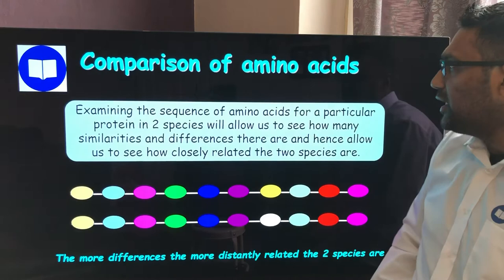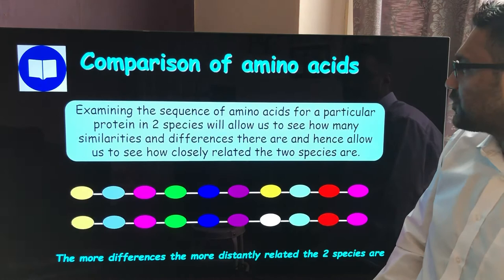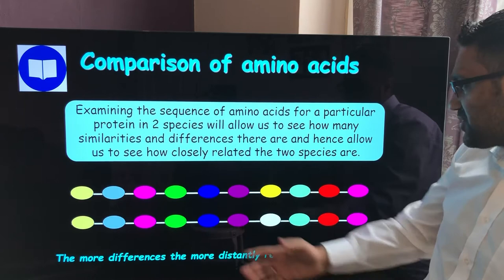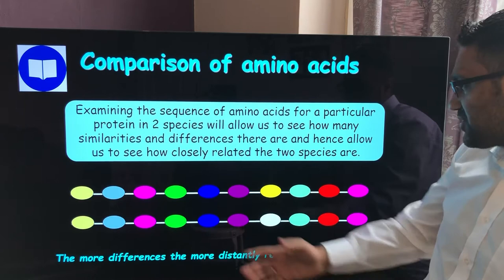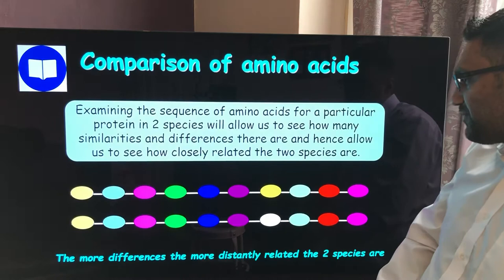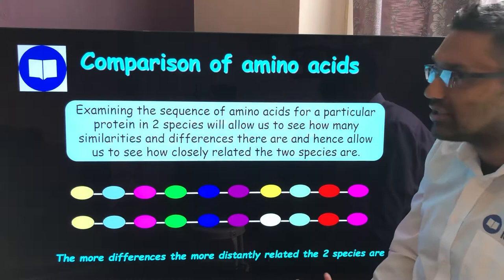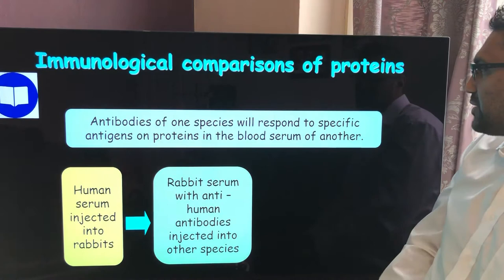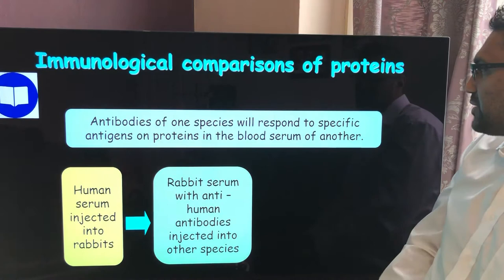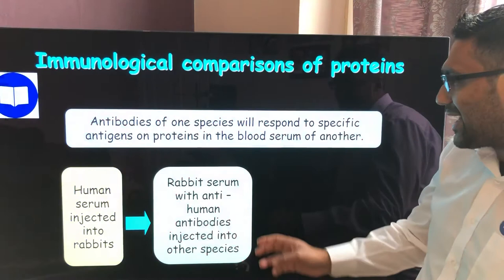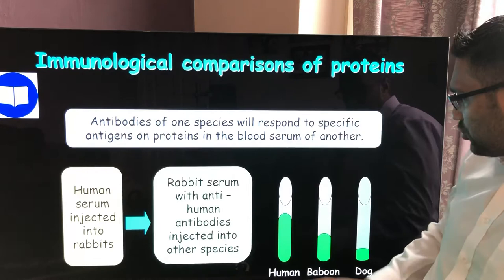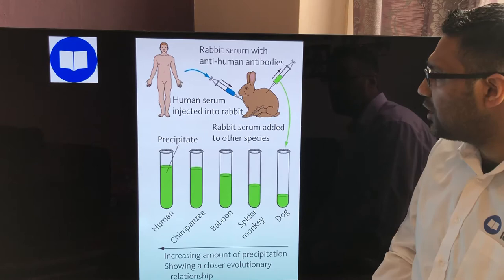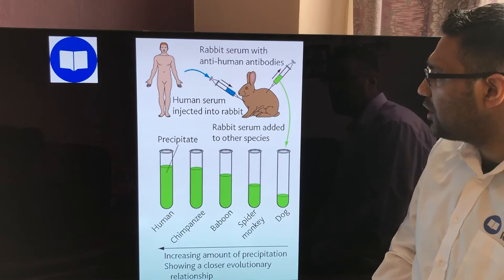To summarise: comparing amino acid sequences — examining the sequence of amino acids for a particular protein in two species allows us to see how many similarities and differences there are, indicating how closely related the two species are. The more differences, the more distantly related; the more similarities, the more closely related. For immunological comparisons: antibodies of one species respond to specific antigens on proteins in the blood serum of another. If you inject human serum into rabbits, the rabbit serum produces an anti-human antibody, and injecting that into other species lets you measure the degree of precipitation to determine closeness of relationship.